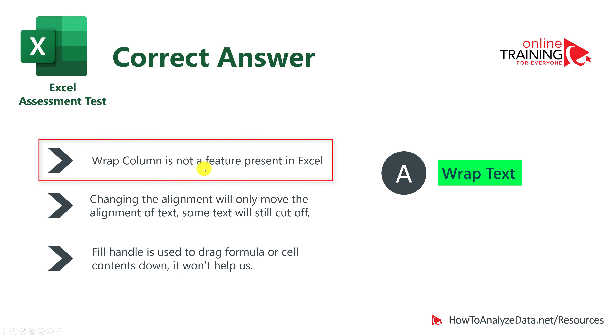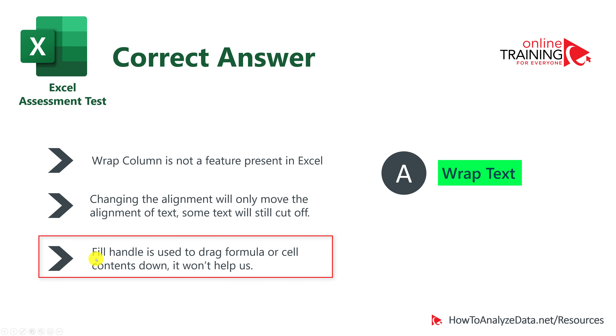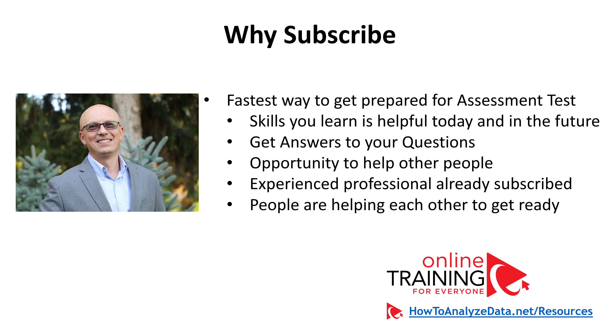The correct answer is A — wrap text. Wrap column is not a valid feature in Microsoft Excel. Changing alignment only moves the text alignment but some text will still be cut off. Fill handle is used to drag formulas or cell content down and won't help here. So choices B through D are designed to trick you. Consider subscribing to this channel — it's one of the fastest ways to prepare for an Excel assessment test.